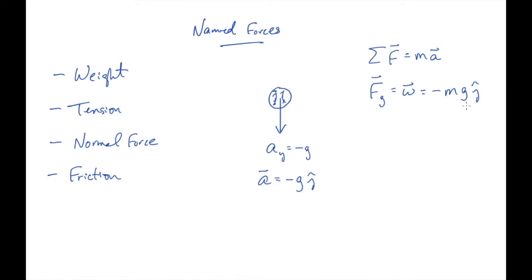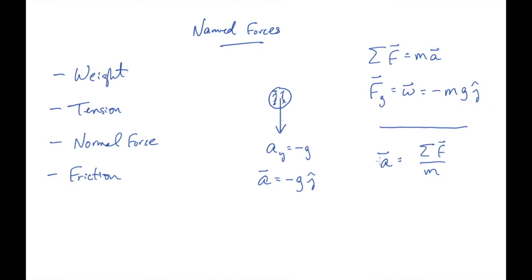Let's talk about units and about mass. If I solve Newton's second law for acceleration, I get: acceleration equals the net force divided by the mass. Mass is apparently some property that gives an object the ability to resist accelerations — the ability to resist changes in its motion. The larger the mass for a given force, the smaller the acceleration. Mass is what gives objects a property we call inertia.